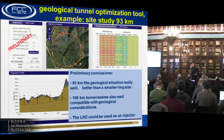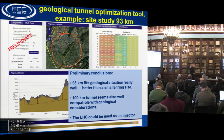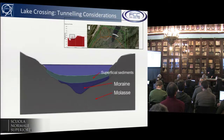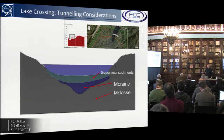A 100-kilometer tunnel is also compatible with the geological boundaries. What's very nice is that the tunnel can be arranged such that the LHC could be used as an injector, which is very attractive because we already have the entire injector complex available to inject into the new collider. Also interesting is the crossing under the lake, because the depth at which we cross determines the depth of the tunnel at other regions. One can see there is molasse, moraine, and sediments.